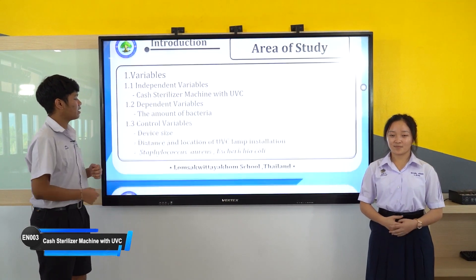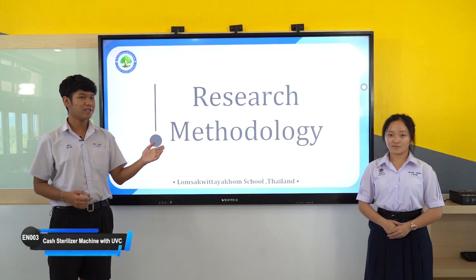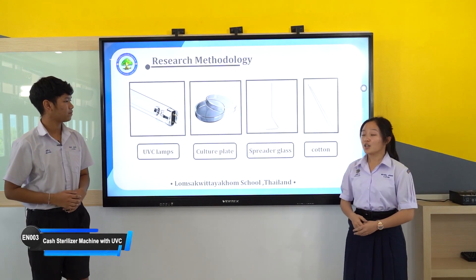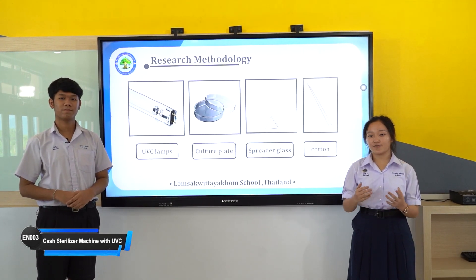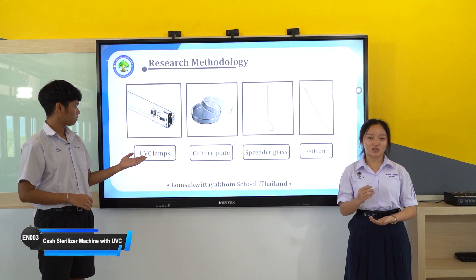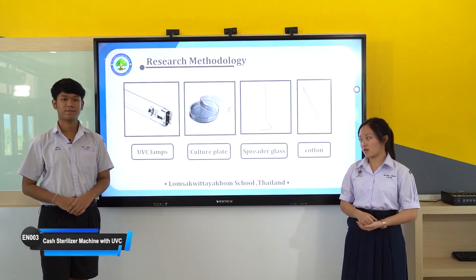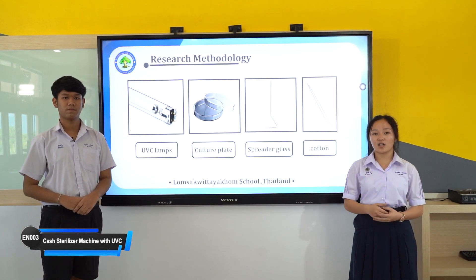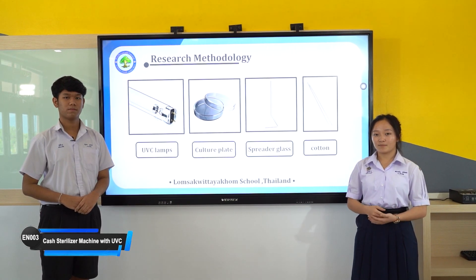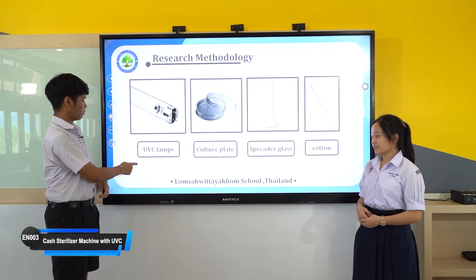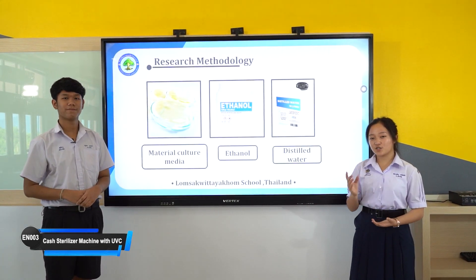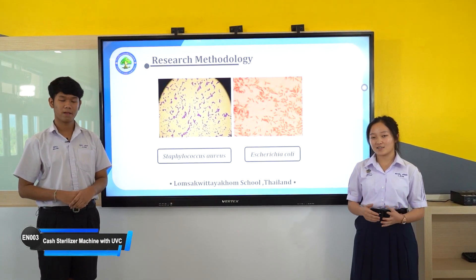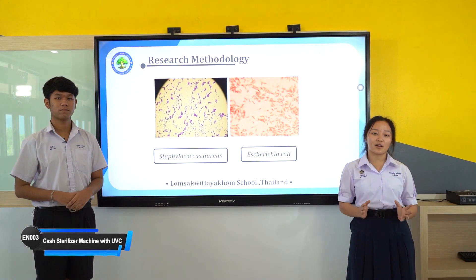The next topic is research methodology. The main tools being used are: UVC TH-18 Plus with wavelength 253.7 nanometers, a culture plate, a spirit lamp, and cotton swabs. The chemicals needed are culture medium material, ethanol, and distilled water. The microorganisms used are Staphylococcus aureus (gram-positive) and Escherichia coli (gram-negative).